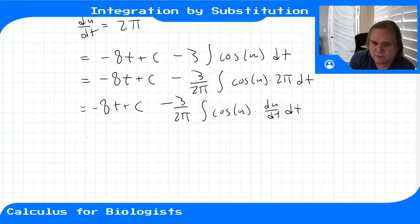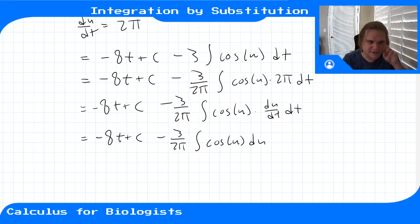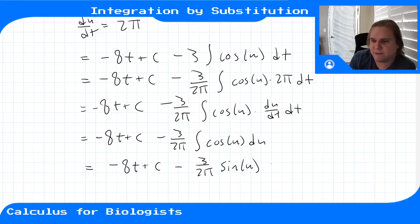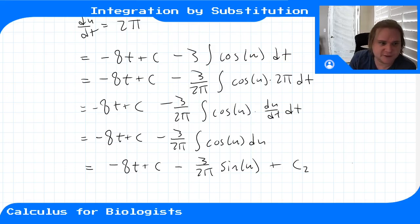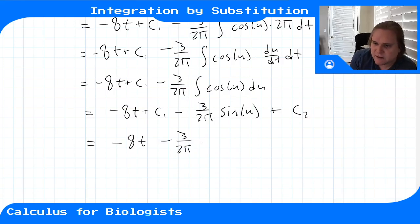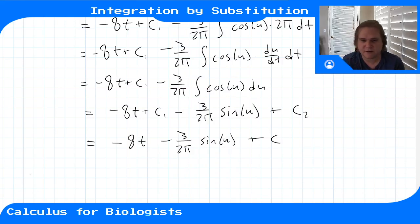This becomes an integral with respect to u: minus 3 over 2π times the integral of cosine(u) du. Recall that sine has derivative cosine, so the anti-derivative of cosine is positive sine. We get minus 8t plus C1, minus 3 over 2π times sine of u, plus another constant C2. We can combine C1 and C2 into one arbitrary constant since they're both completely arbitrary.